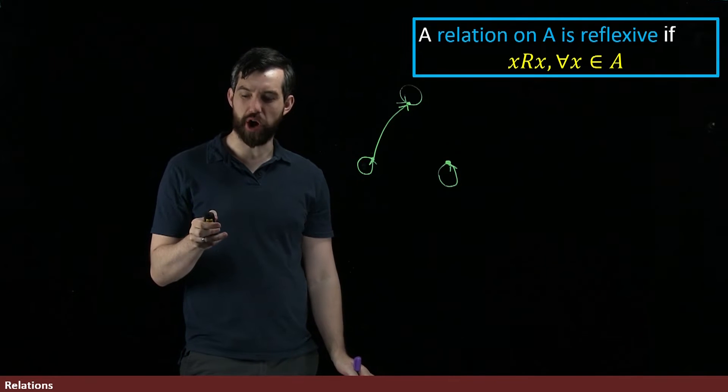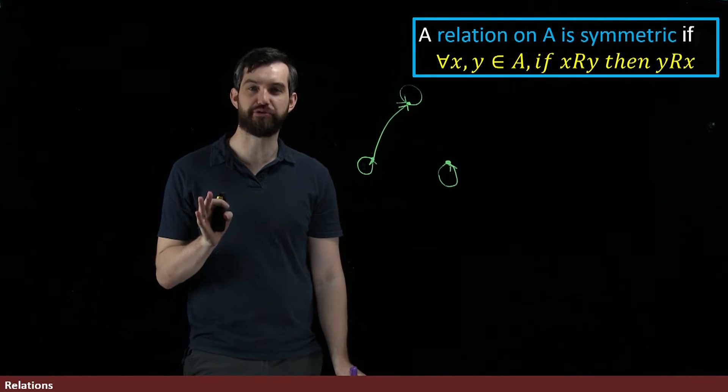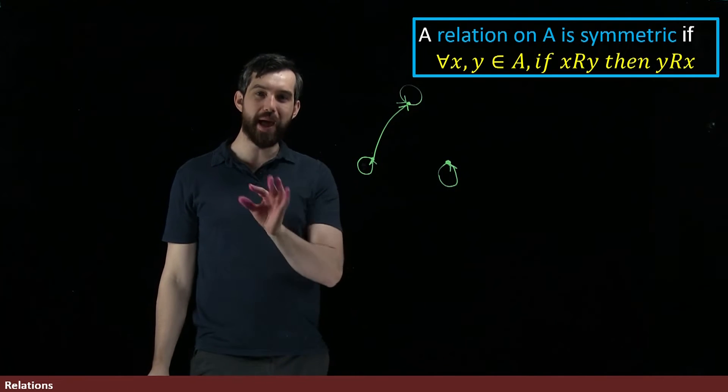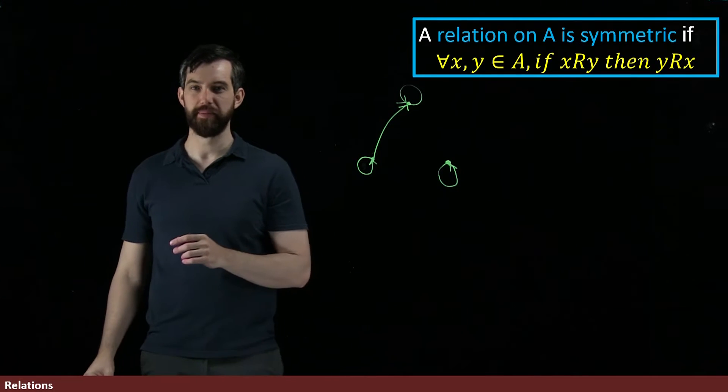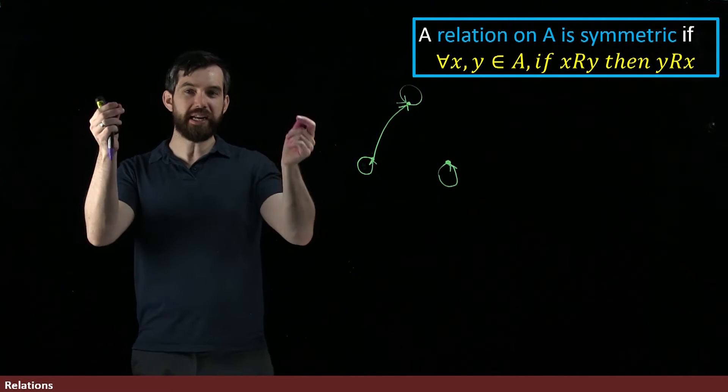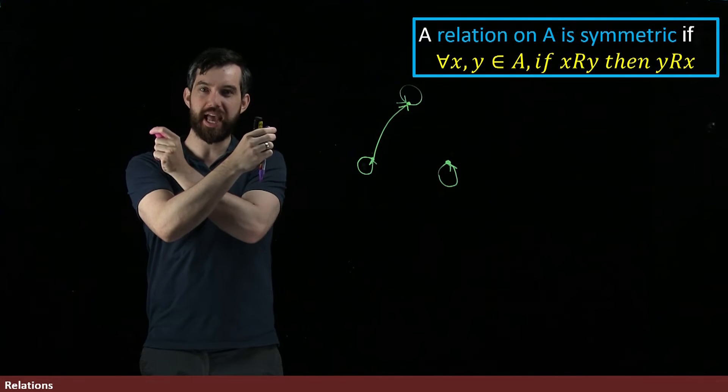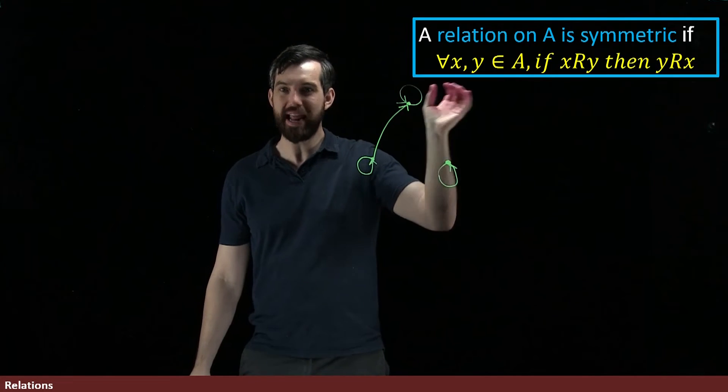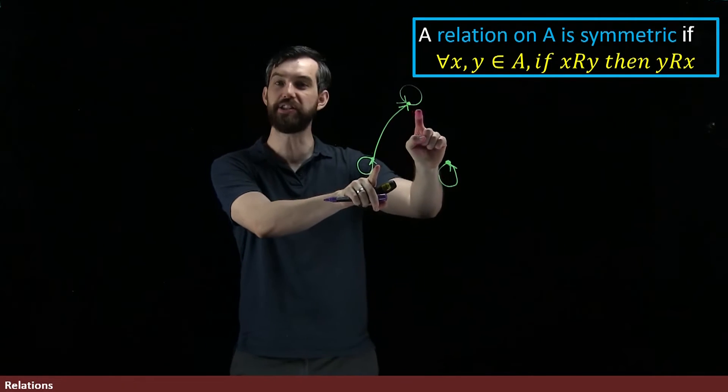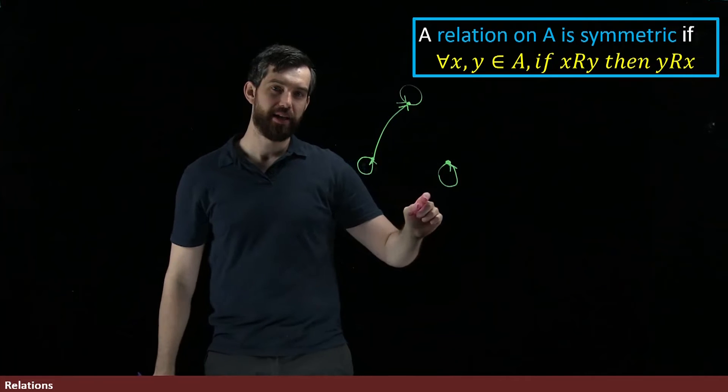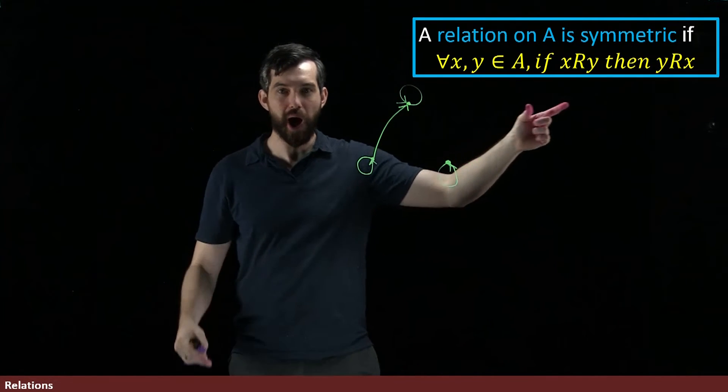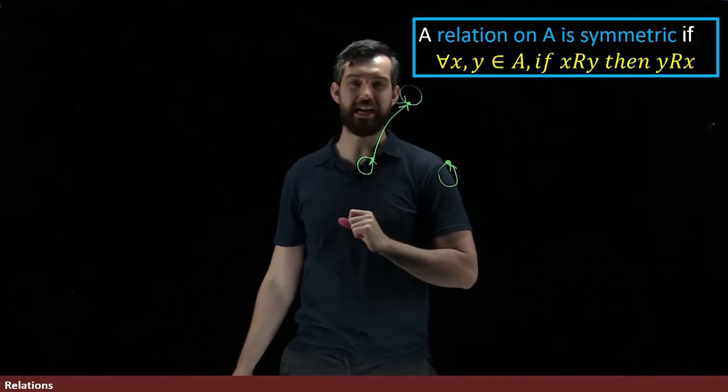The next property we're going to talk about is called symmetric. One of these relations on A is going to be symmetric if it has the following property: that if x were related to y, then y is related to x. Or in other words, for every pair that I might have, any two elements, like these two elements here, if there's a relation in one direction, the x relates to the y, then the y relates to the x as well.